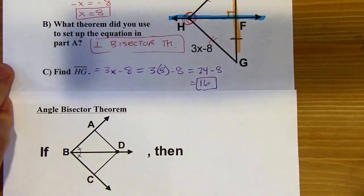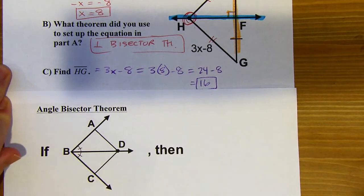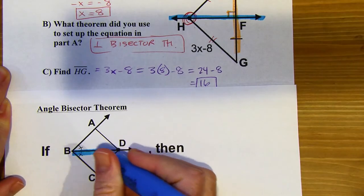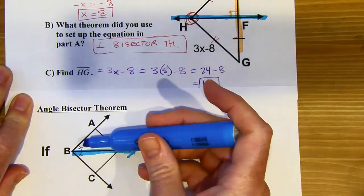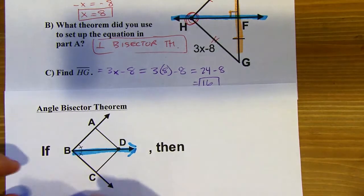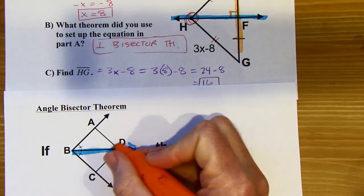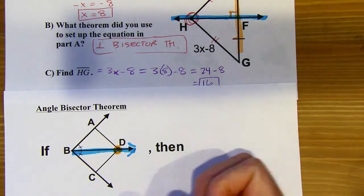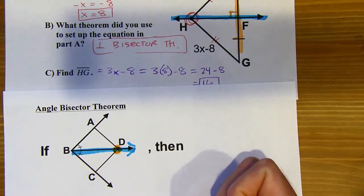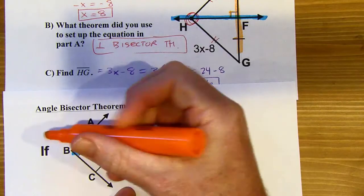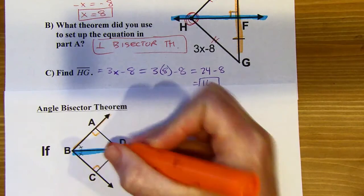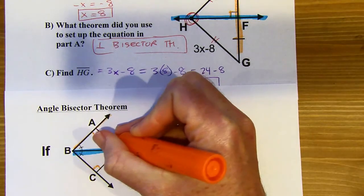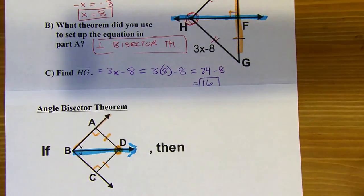The Angle Bisector Theorem is a similar kind of idea. Looking at this picture, we've got an angle bisector — ray BD is bisecting that angle because those two angles are congruent. If I choose any point on this line, like point D, it's going to be equidistant from the two sides of the angle. The distance from the point to each side is the perpendicular distance, the shortest possible distance, and those two distances are going to be congruent. So point D is equidistant from the two sides of the angle, meaning DA is congruent to DC.